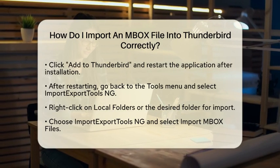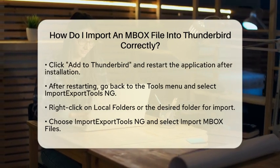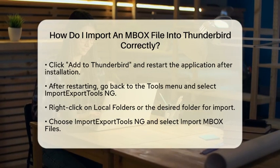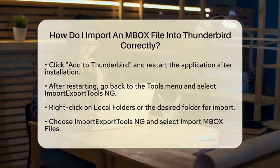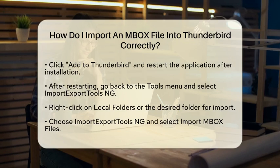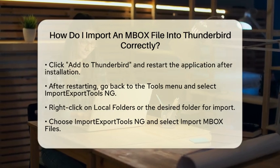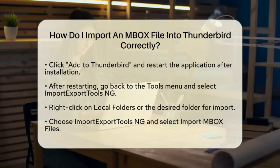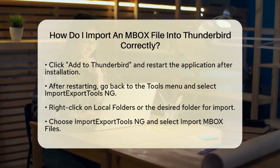Now that you have the add-on, it is time to import your mbox file. After restarting, go back to the Tools menu. Select Import-Export Tools Inc. from the menu. You will want to right-click on Local Folders or any folder where you want to import your emails. Choose Import-Export Tools Inc. and then select Import Mbox Files.